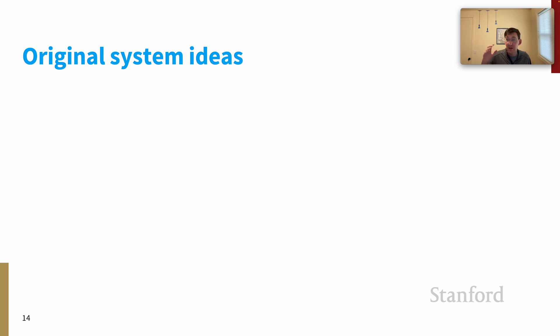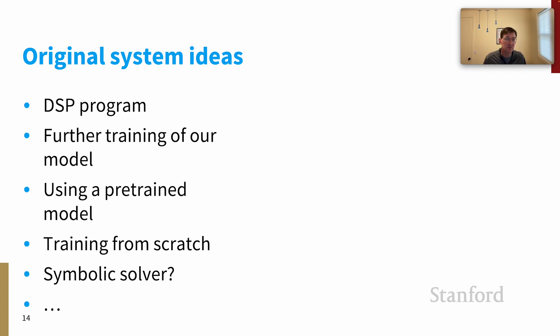With that rule in place, I thought I would just review a few original system ideas. And remember, this is not meant to be exhaustive, but rather just inspiring about some potential avenues. So here they are. You could write a DSP program. You could do further training of our model. You could use a pre-trained model. You could train from scratch. Maybe you could even write a symbolic solver. And there might be other things that you can do. Let me elaborate just briefly on a few of these options.